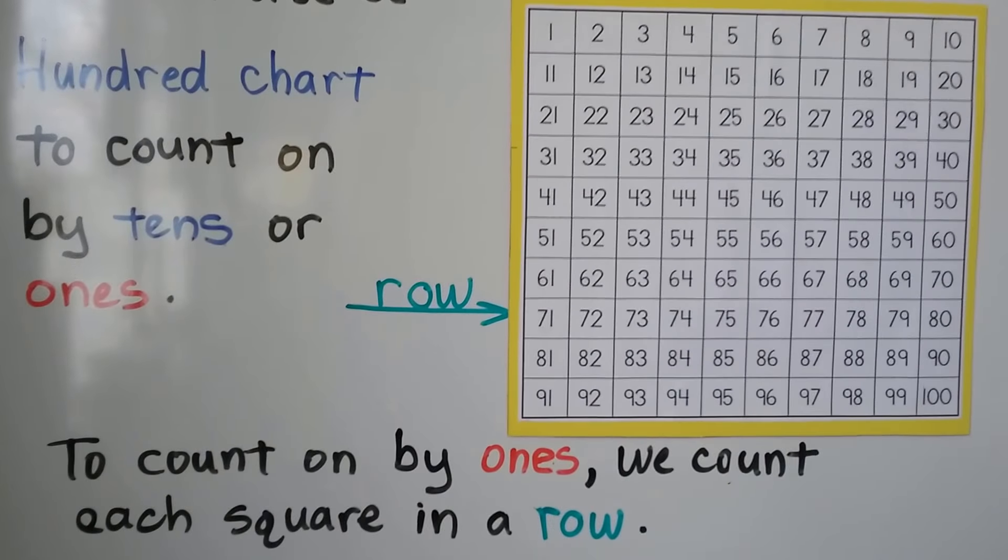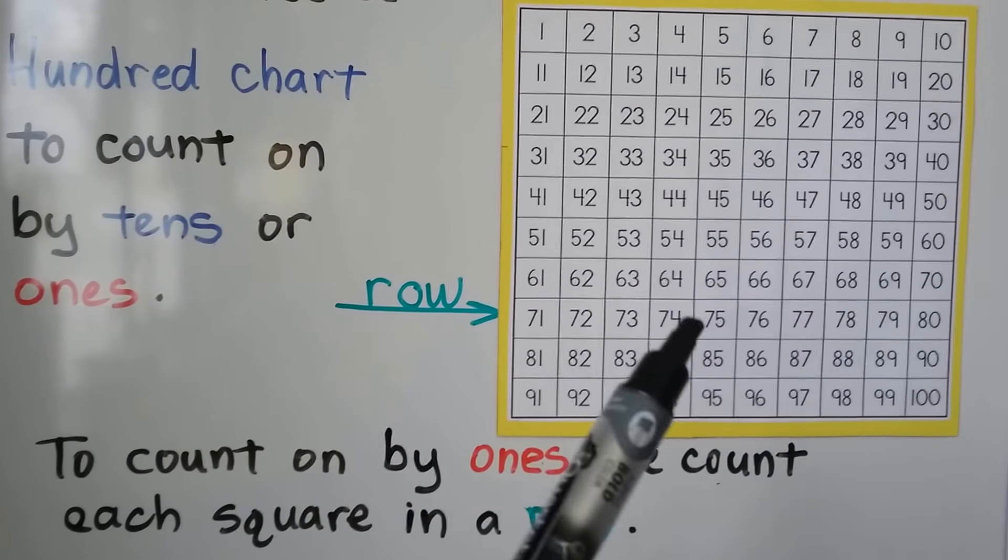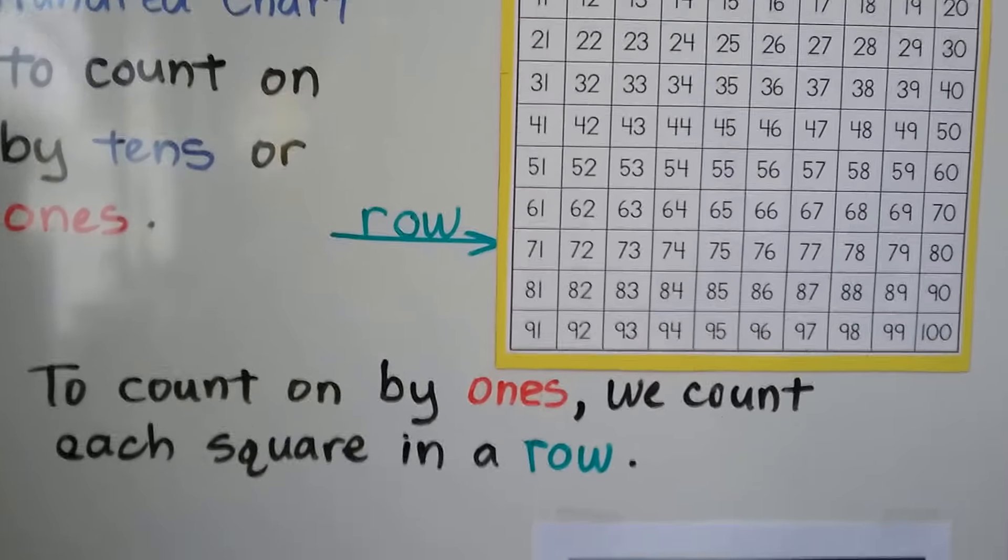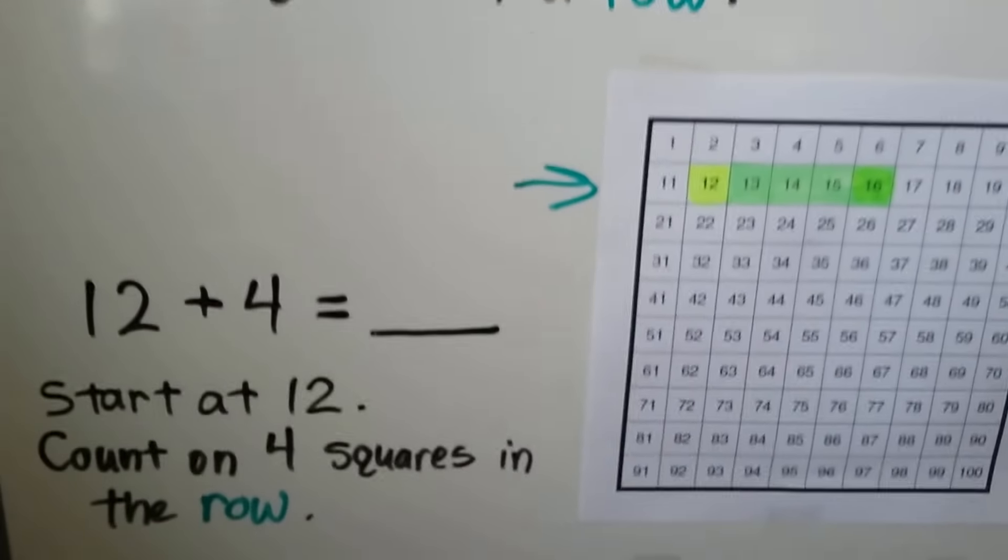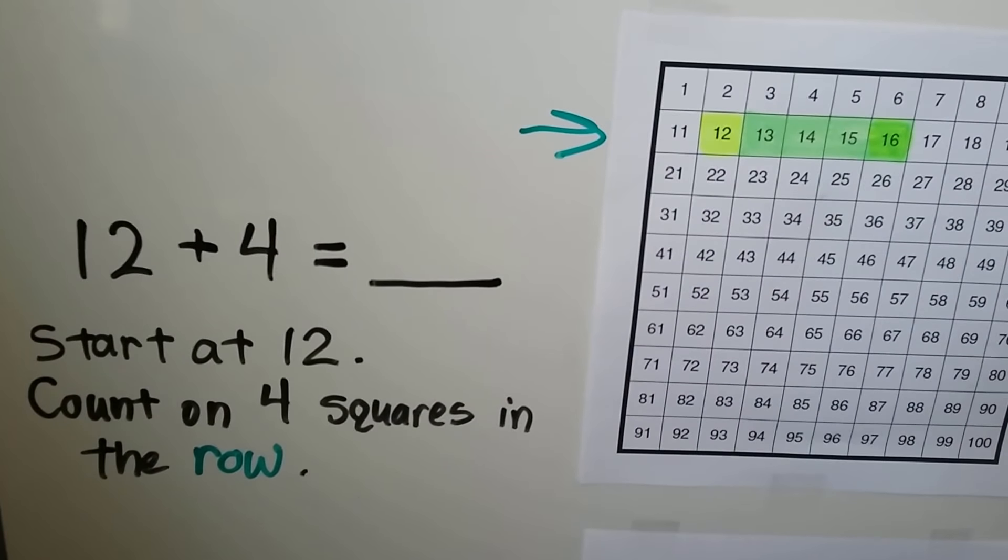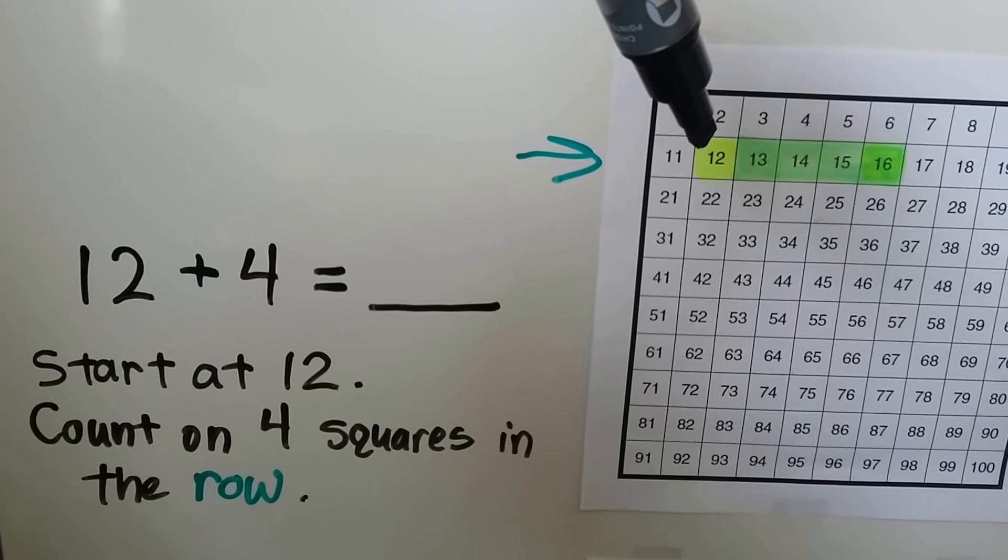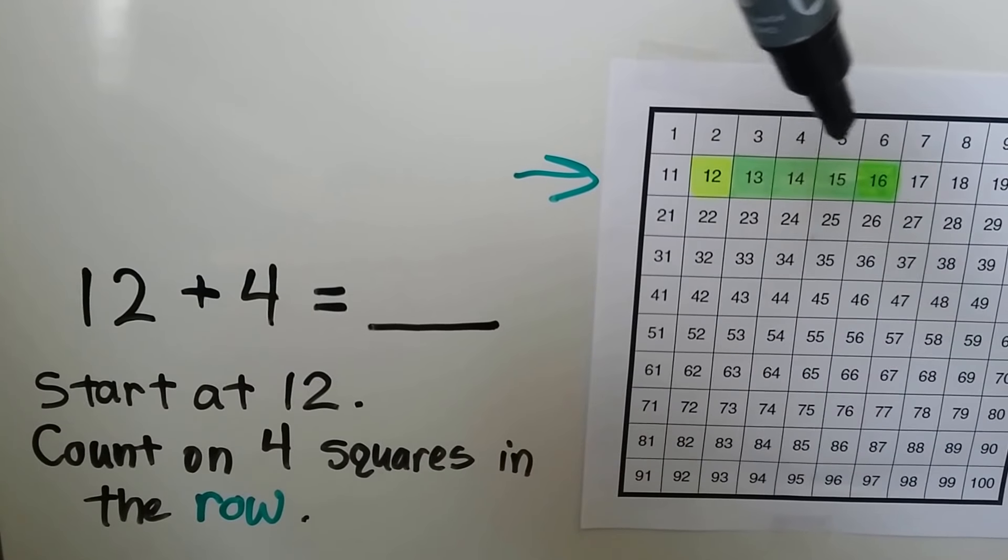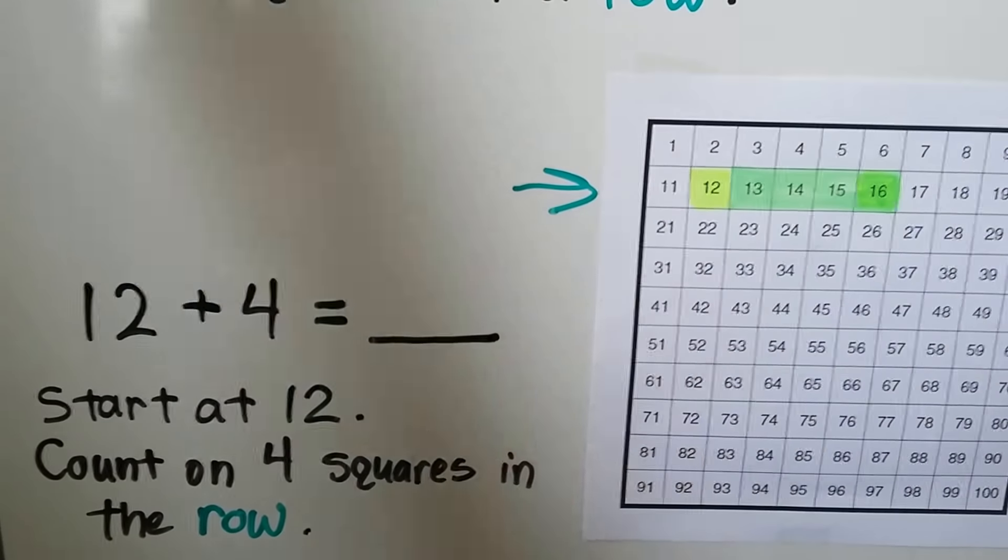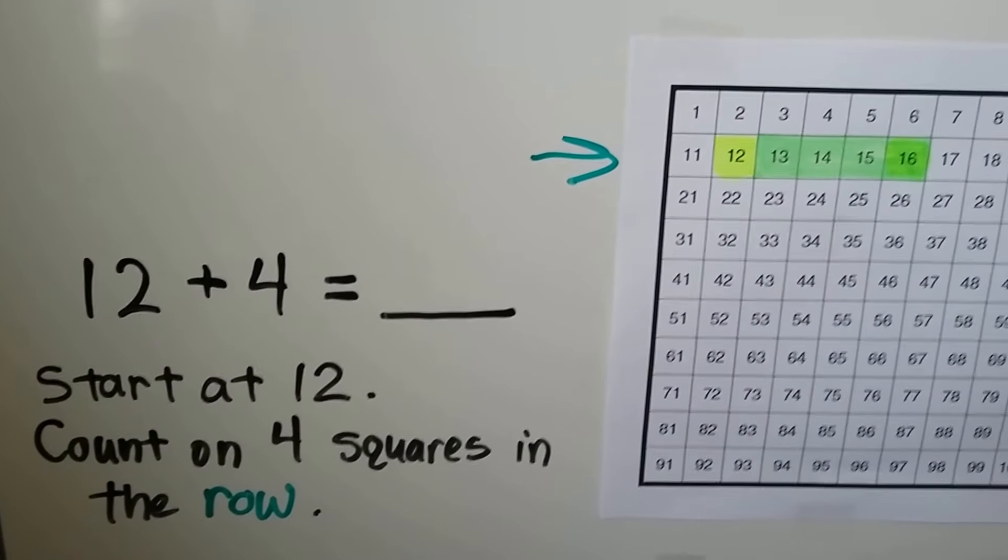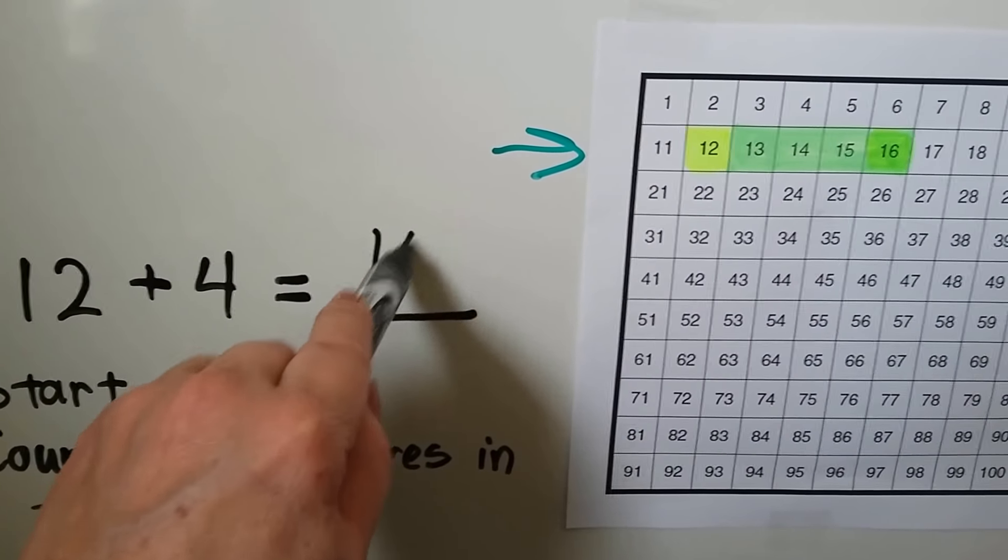To count on by ones we count each square in a row going across. 12 plus 4. We start at the 12 and we count on four squares in the row. One, two, three, four. We land on 16. 12 plus 4 is equal to 16.